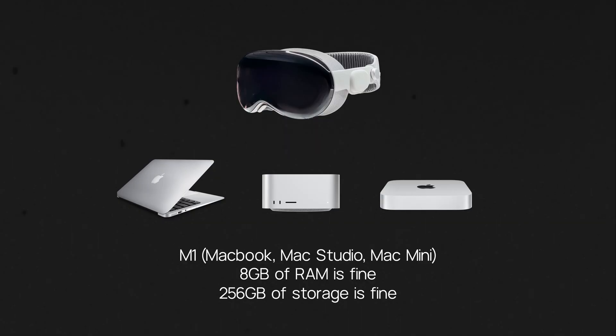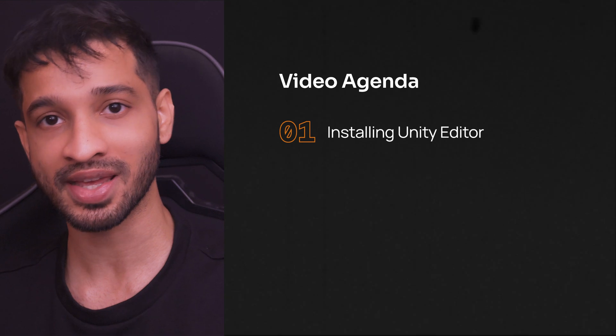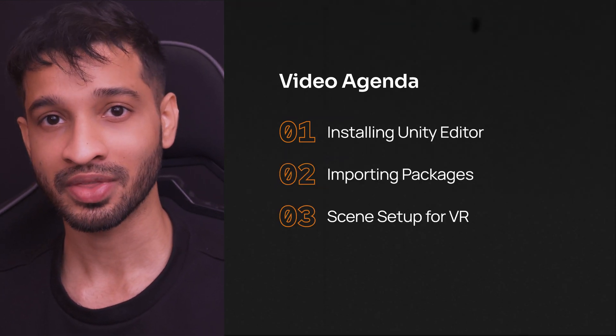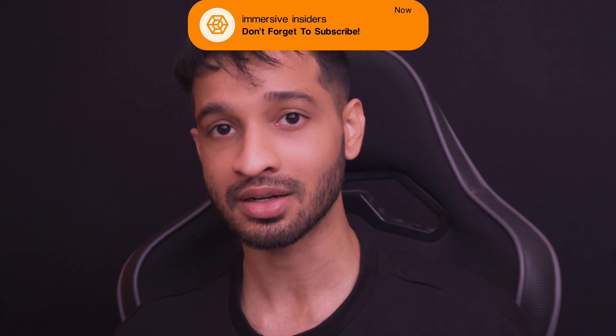In our previous video we saw all the things you'll need — the hardware, software, and skills required to get started with VR development. In this video we'll be taking it a step further and creating an application for VR headsets. We'll cover downloading and installing Unity Editor, importing required packages, setting up a scene for VR, and building and testing it on our headset. We'll be using Meta Quest devices, but since we're using Unity's XR package and OpenXR plugins, you can build and test on any VR headset that supports OpenXR.